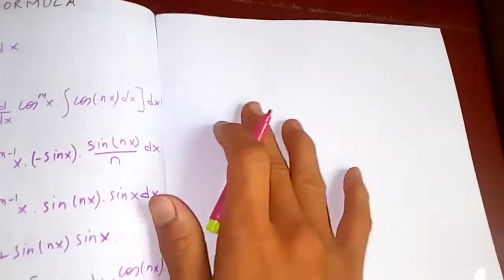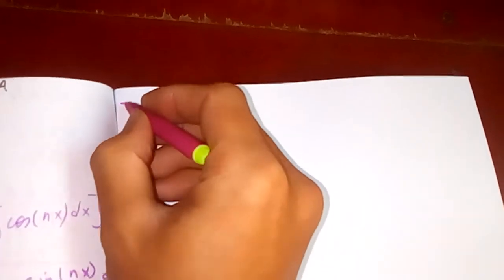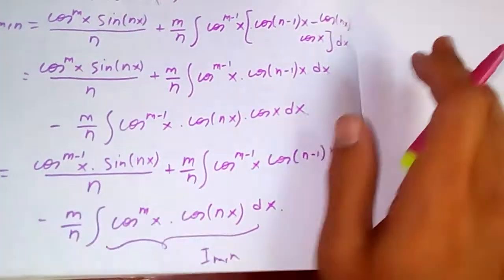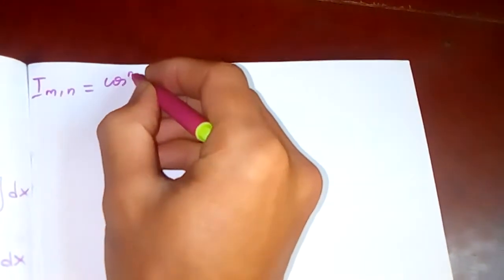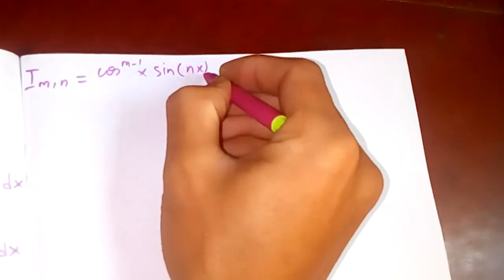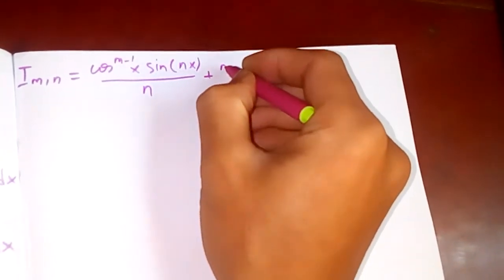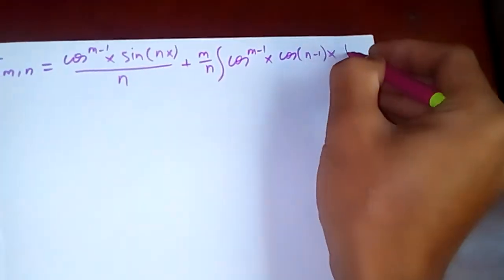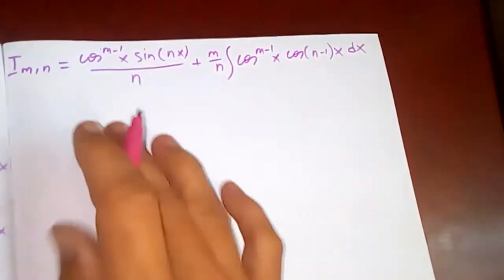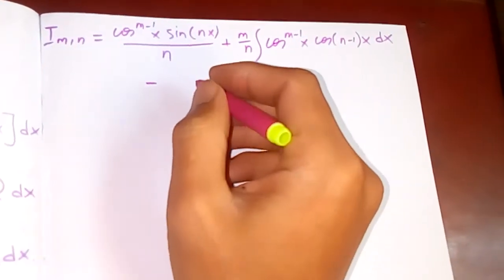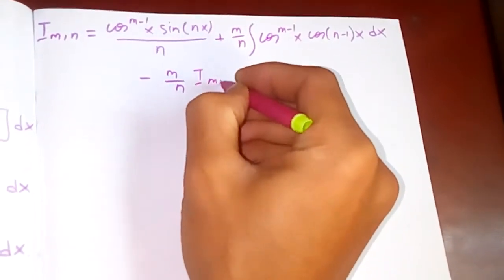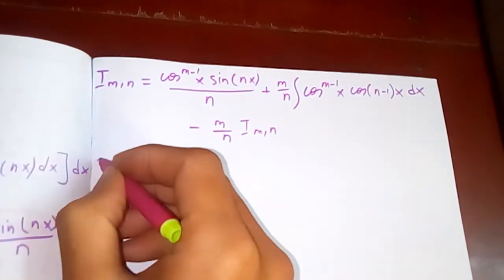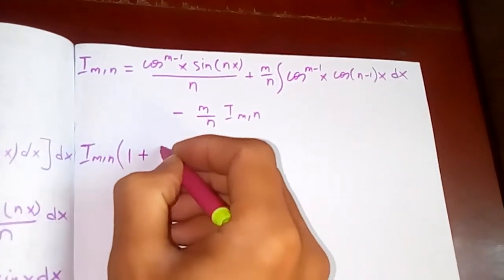Now let me write this down. We have I_{m,n} equal to cos^(m-1)(x)·sin(nx)/n, plus m/n times integration of cos^(m-1)(x)·cos(n-1)x dx, minus m/n · I_{m,n}. So transferring the I_{m,n} term to the left side, we get I_{m,n} · (1 + m/n).